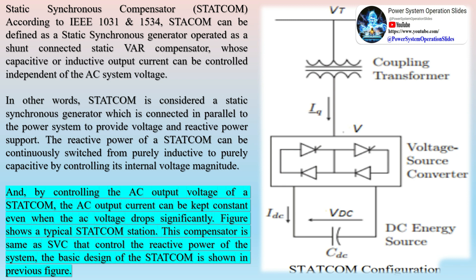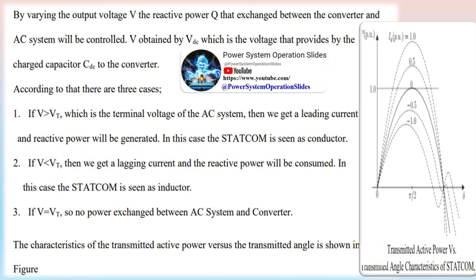The second method is shunt inductive compensation, used when there is low or no load at the receiving end of the transmission line. Low or no load causes the system to draw very little current, resulting in voltage amplification due to the shunt capacitance in the transmission line. This phenomenon is called the Ferranti effect, and it occurs when the receiving end voltage is higher than the sending end voltage. To compensate, shunt inductors are connected along the transmission line.